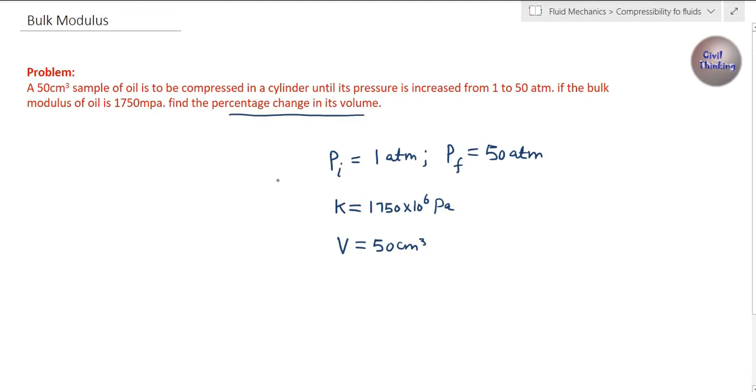Now we know the formula of bulk modulus. K is equal to ΔP upon volumetric strain. This is volumetric strain, and ΔP is change in pressure.